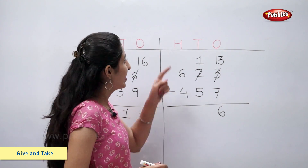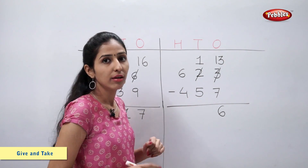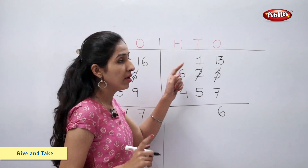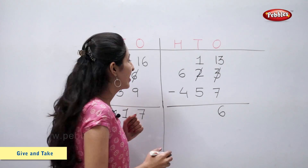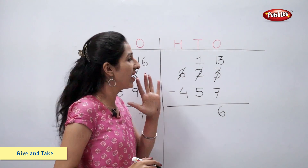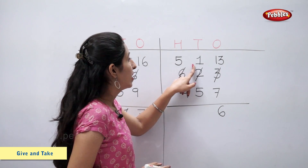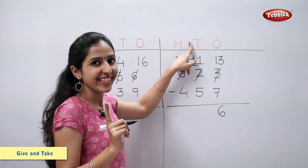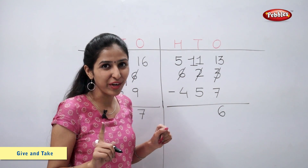Let's subtract tens. One minus five is not possible. We cannot subtract five tens from one ten, so we will borrow one hundred from the hundreds column. Six hundreds minus one hundred is equal to five hundreds. Now one becomes eleven tens. Eleven minus five is equal to six.